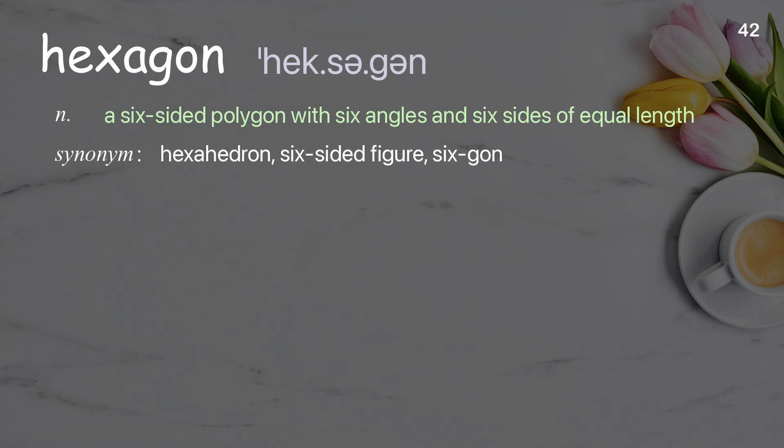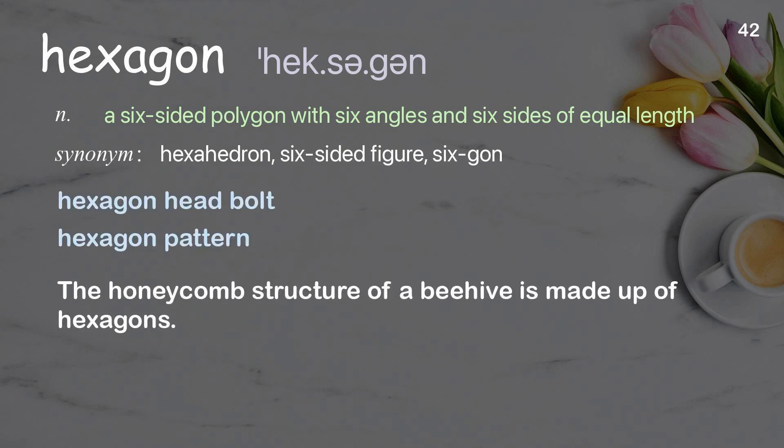Hexagon. A six-sided polygon with six angles and six sides of equal length. Examples: Hexagon head bolt. Hexagon pattern. The honeycomb structure of a beehive is made up of hexagons.